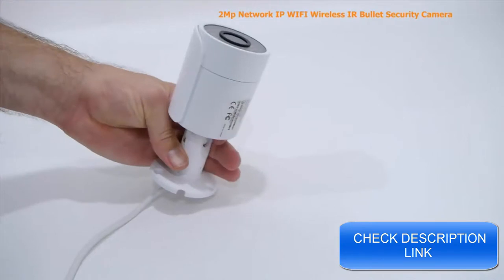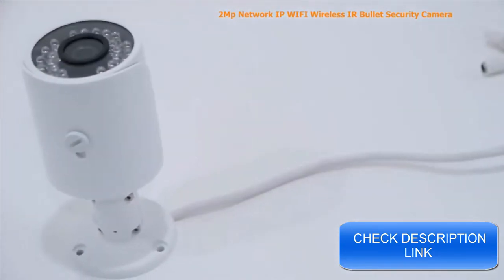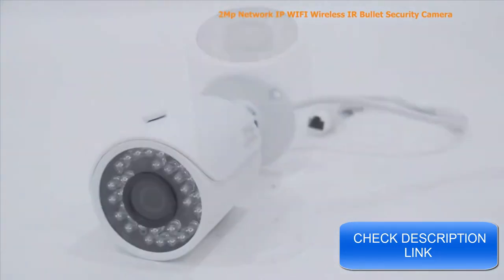It's got a 3.6mm fixed lens, a 1/3rd inch CMOS image sensor, and can see up to 100 feet in total darkness.